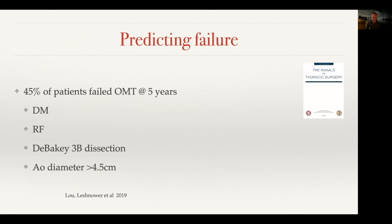We've looked for many years at ways to try and predict failure, and you'll see this study both in this talk and the subsequent one. In this paper, 45% of patients failed optimal medical therapy at five years. The common thread: diabetes, renal failure, a DeBakey type 3B dissection, and a large aortic diameter.